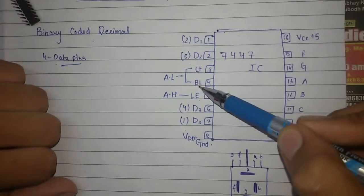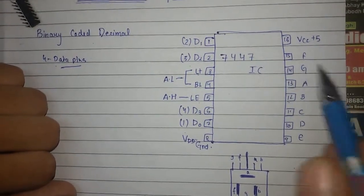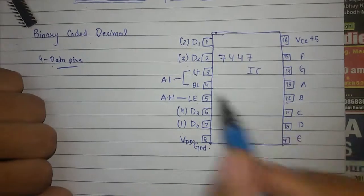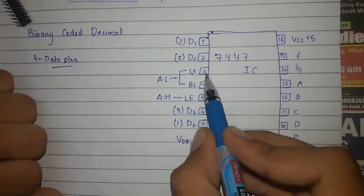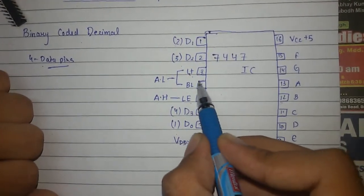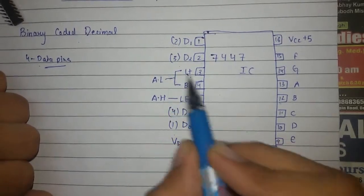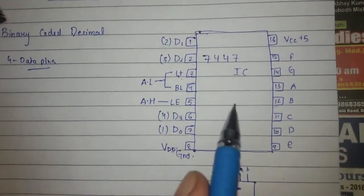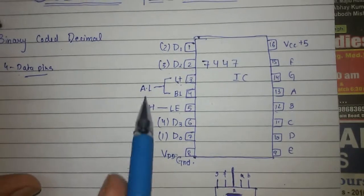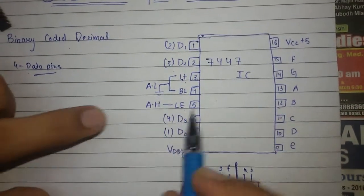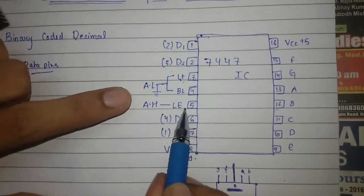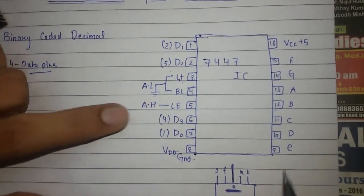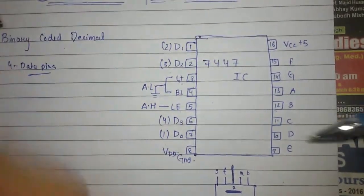There are three extra pins: lamp test, blanking, and enable. Whenever you want to drive your seven segment display, keep the lamp test pin (pin 3) and blanking pin (pin 4) active low - that means either leave them without any connection or connect them to ground. You will give VCC to the enable pin.